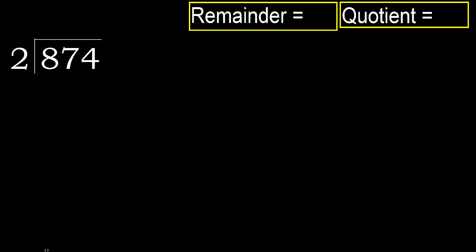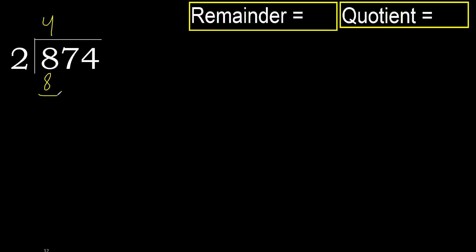874 divided by 2. 8 is not less, therefore with 8: 2 multiplied by which number is nearest to 8 but not greater? 2 multiplied by 5 is 10 — it's greater. 2 multiplied by 4 is 8 — it's not greater.